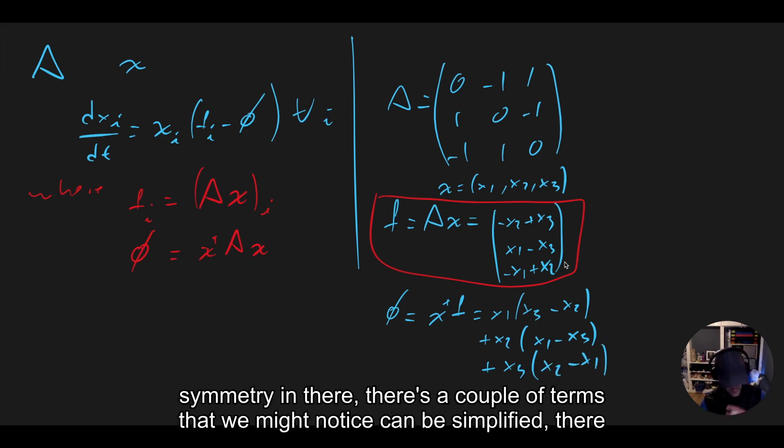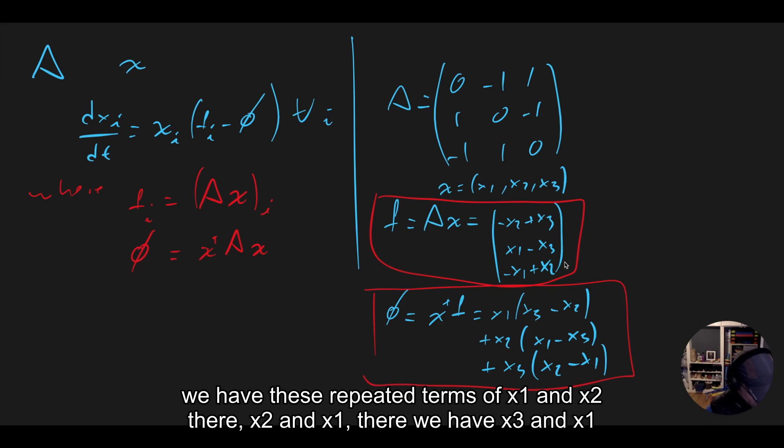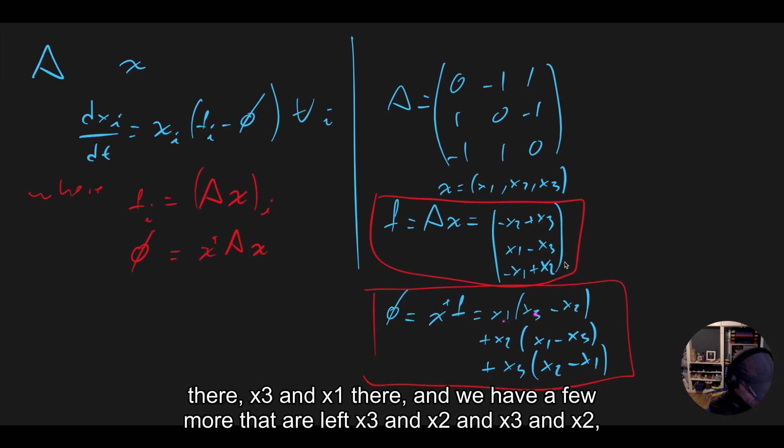It's a nice bit of symmetry in there. There's a couple of terms that we might notice can be simplified. There we have these repeated terms. We have x1 x2 there, x2 and x1. There we have x3 and x1 there, x3 and x1 there.